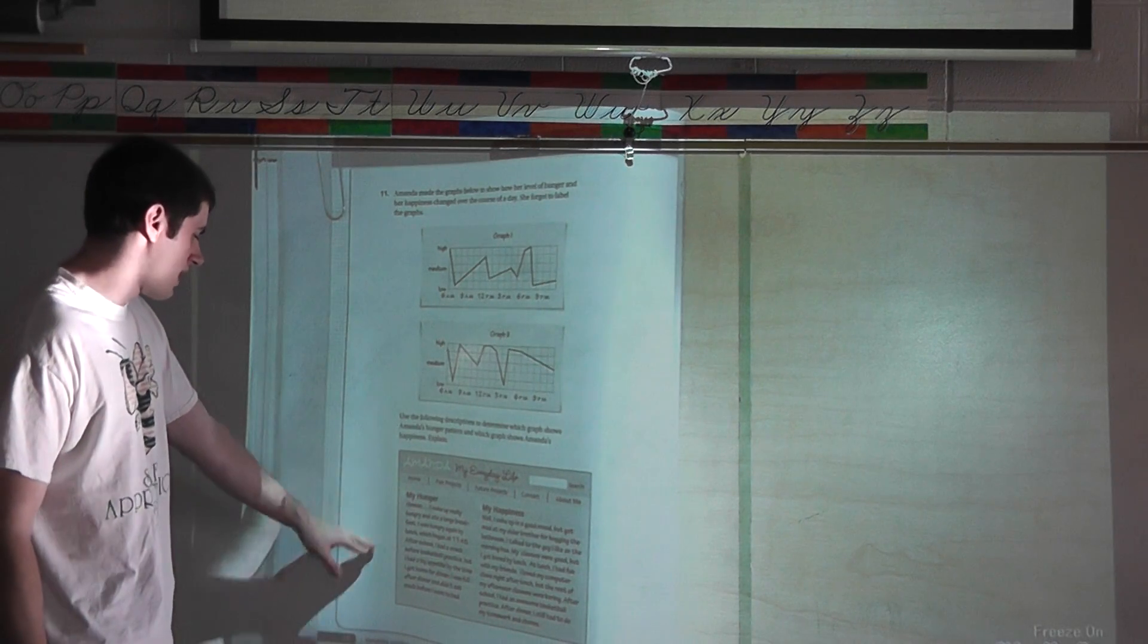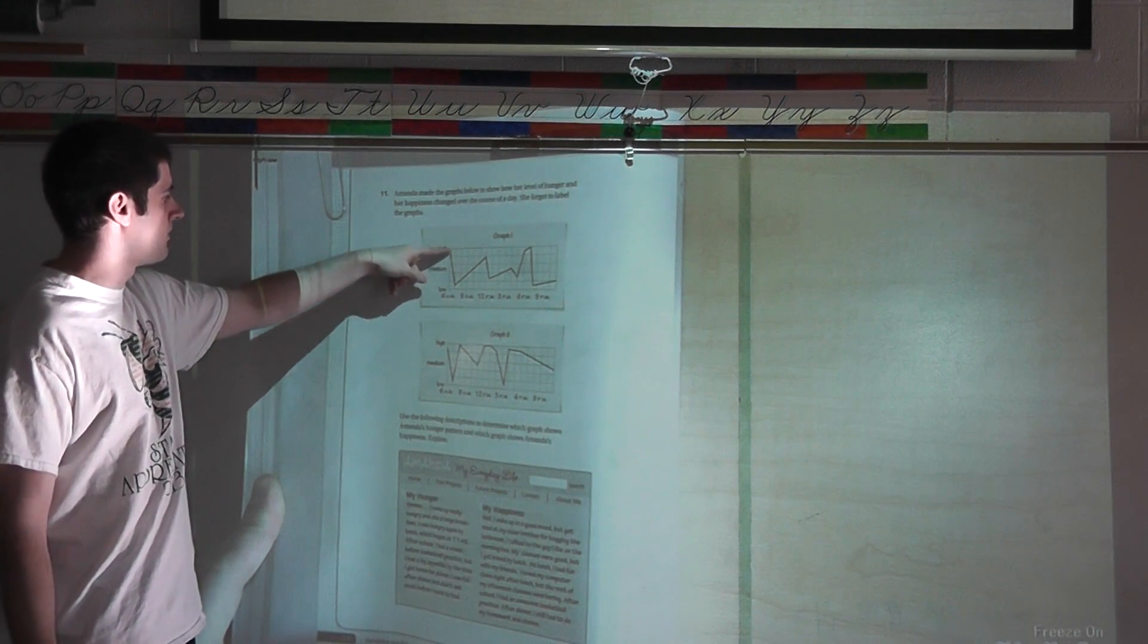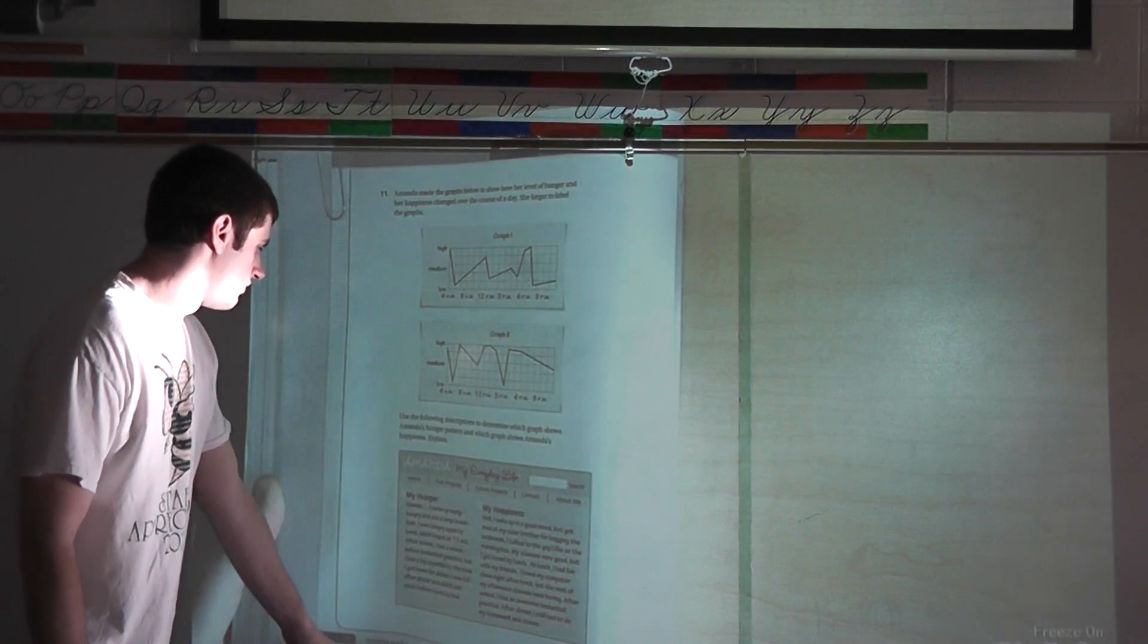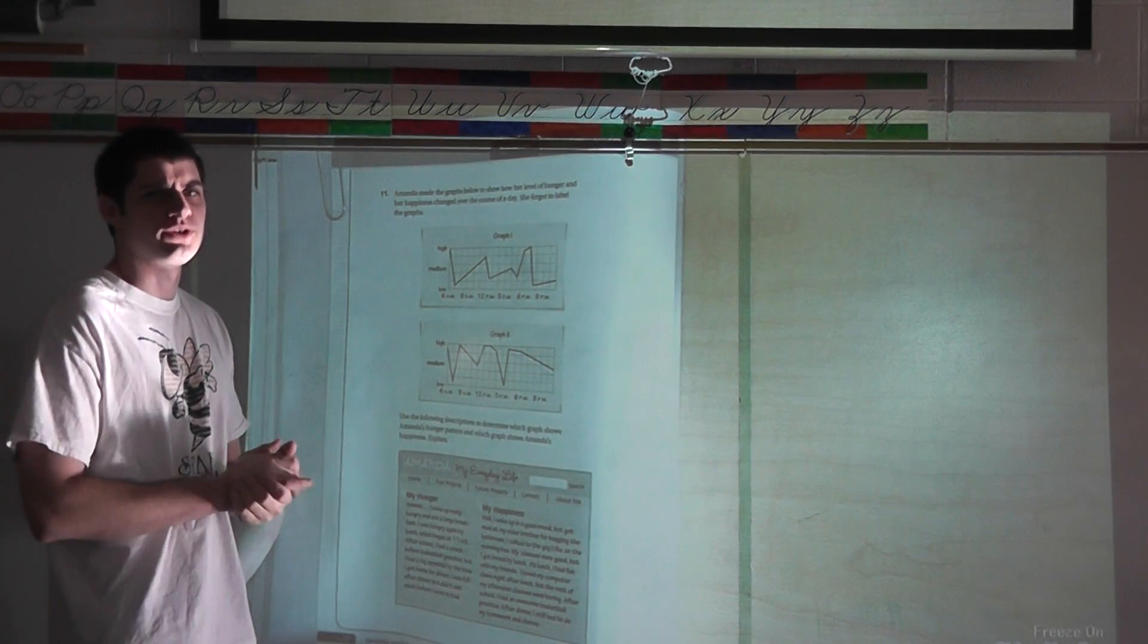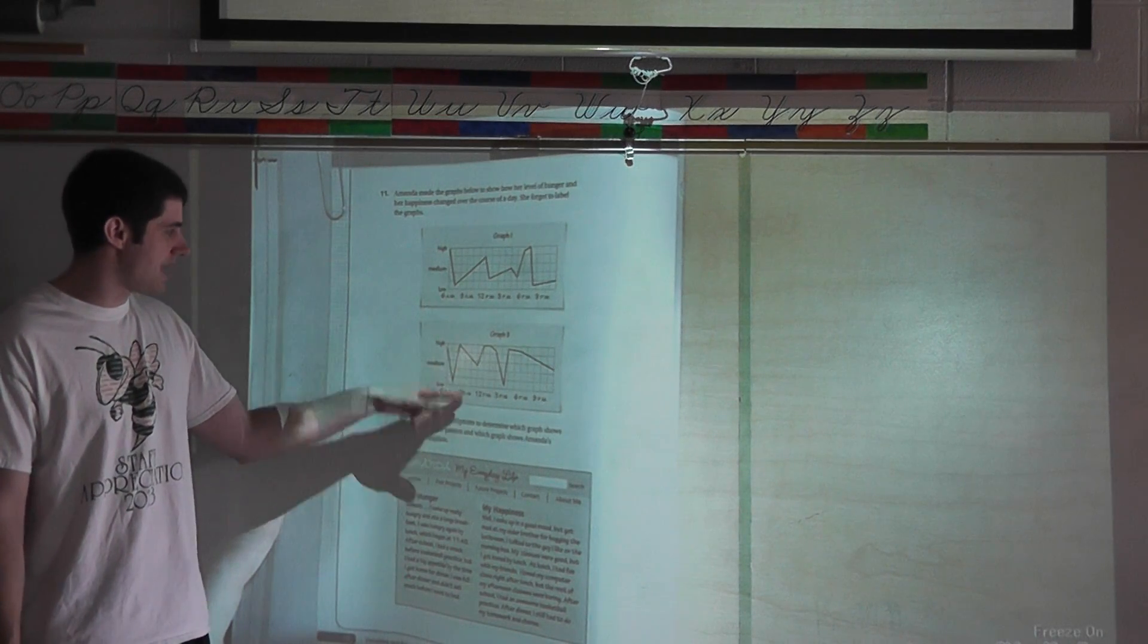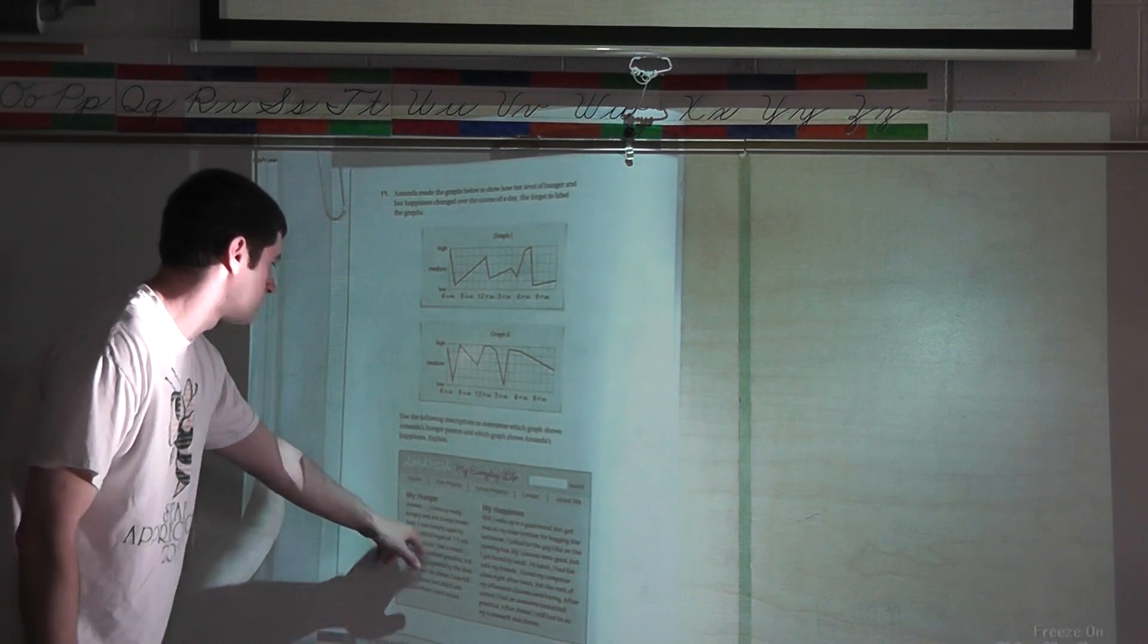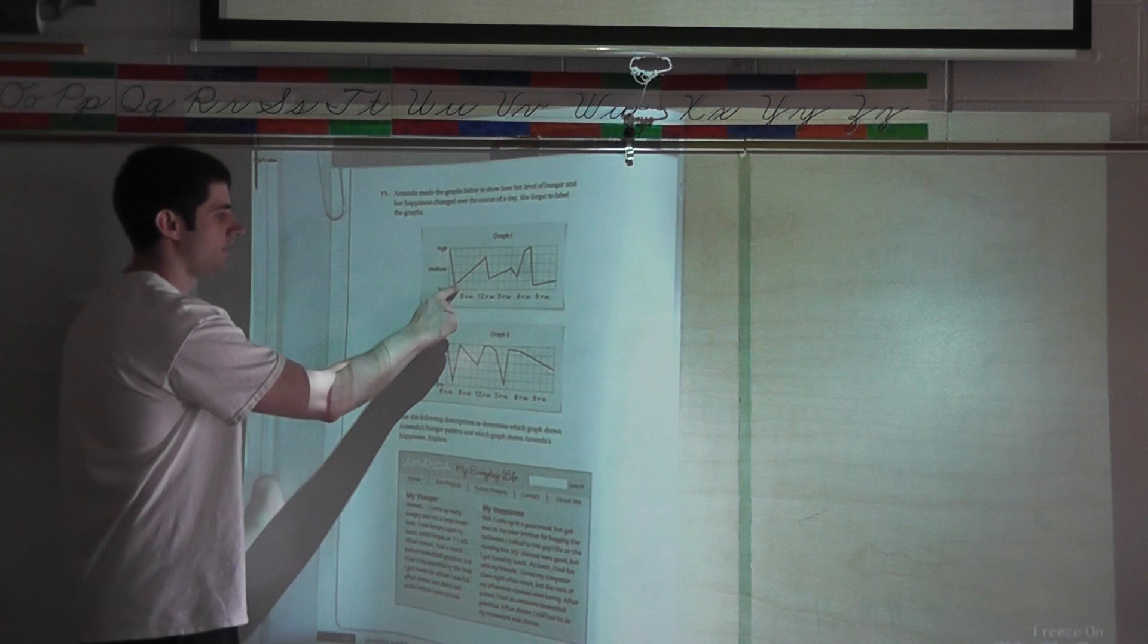I'm going to take a look at hunger. It says, I woke up really hungry and had her breakfast. She would wake up. She's really hungry. It's high. Then she eats. It would go down. If I look at graph two here, she starts off pretty hungry, and it goes down. So, that would work. Let's look at happiness. When she woke up, she was in a good mood, but then she got in a fight with her brother. She might wake up in a good mood, and it might drop. So, either graph could start off telling both stories.